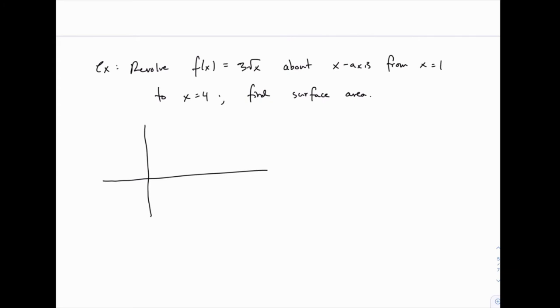Just to give you a brief sense of what this looks like, 3 square root of x looks more or less like this, the upper half of a parabola, and then if we revolve that around the x-axis, we get something like this bowl shape on its side.